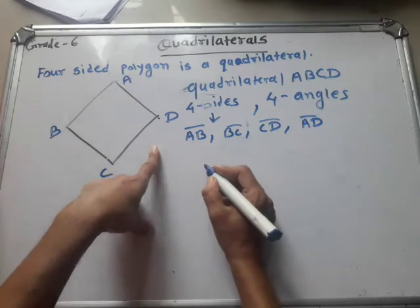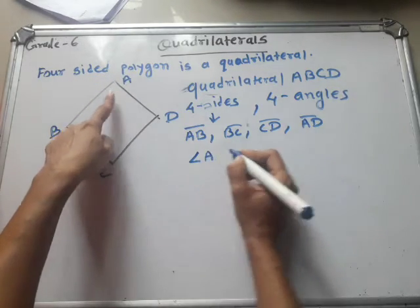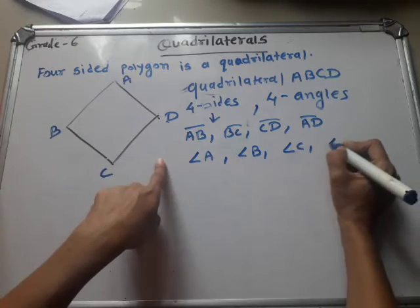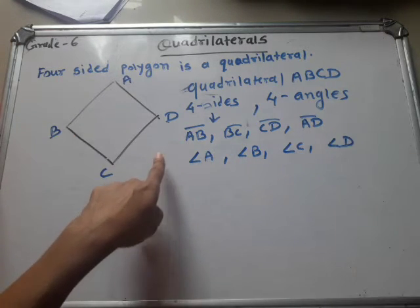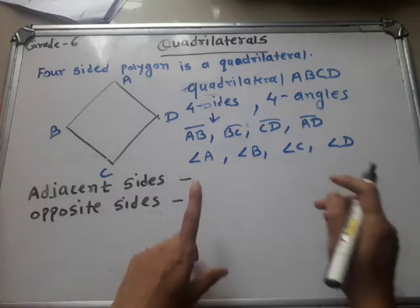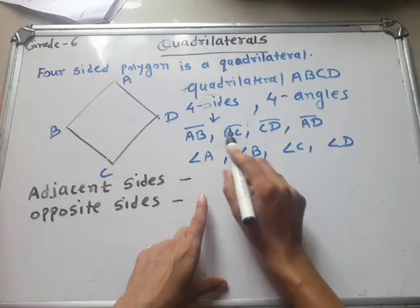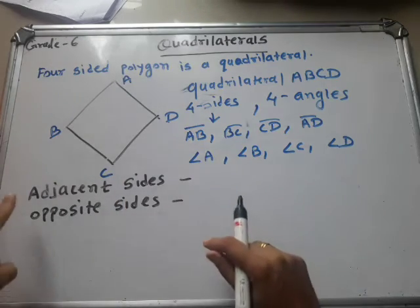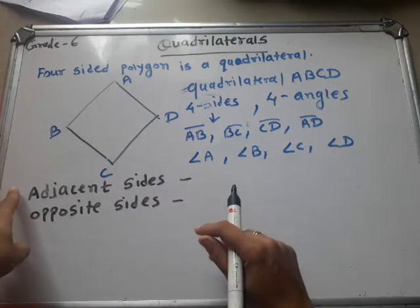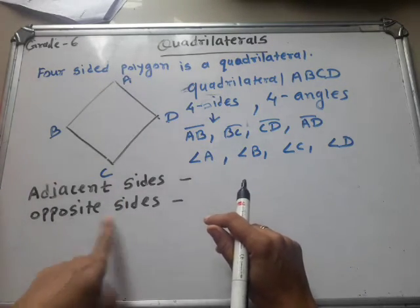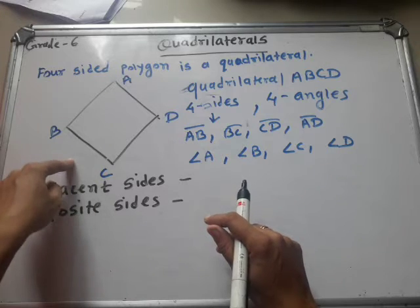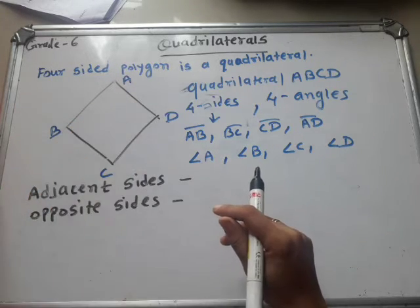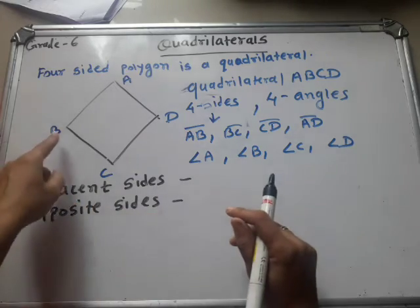And which are the angles here? Angle A, angle B, angle C, and angle D. Now we see a new term: adjacent sides and opposite sides.